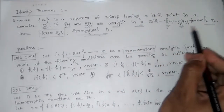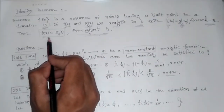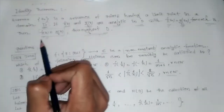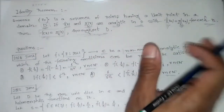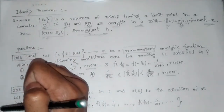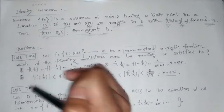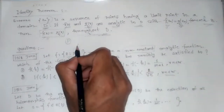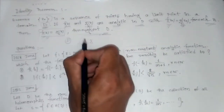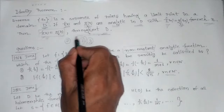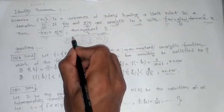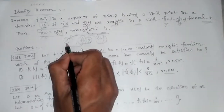...with f(z_n) equal to g(z_n) for each n, then f(z) equals g(z) throughout D. Suppose D is a domain and f and g are analytic in D, and f and g agree on a sequence which has a limit point in D, then f(z) equals g(z) throughout D.